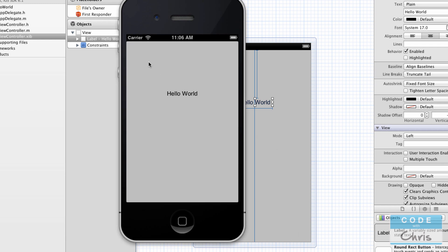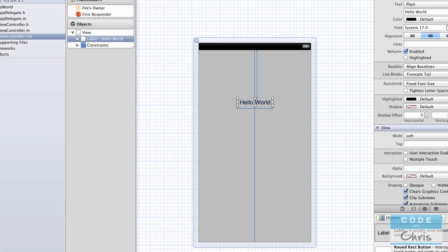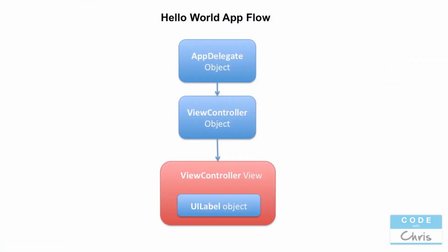The question I want to ask is how did it get to this point? If you take a look at this diagram — it's going to look very similar to the previous app flow diagram from a couple of videos ago — basically, looking at the files in Xcode, the app delegate is the entry point. So app execution starts at the app delegate, then it gets to the view controller object which creates a view object from the xib file, and in that view object you have a UI label.